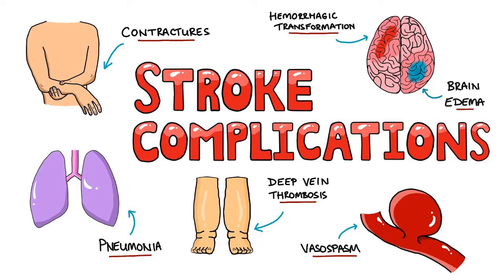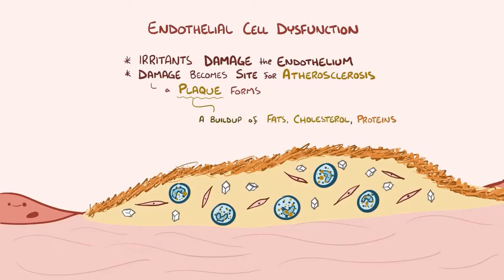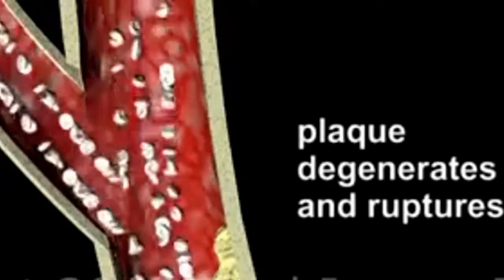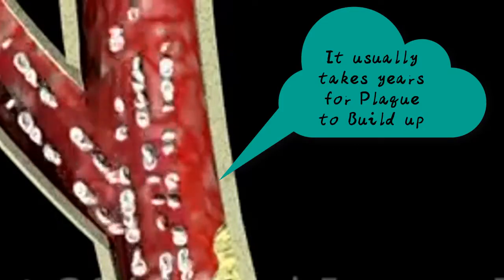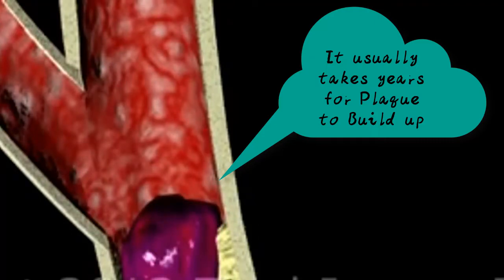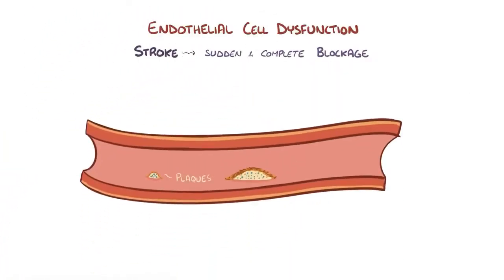One irritant is the toxins found in tobacco, which float in the blood damaging the endothelium. Endothelial cell dysfunction becomes a site for atherosclerosis, where a plaque forms — a buildup of fat, cholesterol, proteins, calcium, and immune cells — that obstructs arterial blood flow. The plaque has two parts: a soft, cheesy-textured interior and a hard outer shell called the fibrous cap. Branch arteries, and particularly the internal carotid and middle cerebral arteries, are common spots for atherosclerosis. Usually it takes years for plaque to build up, and this slow blockage only partially blocks arteries, so even though less blood reaches brain tissue, there is still some flow.